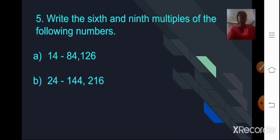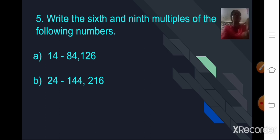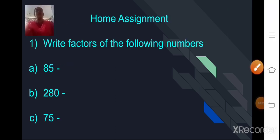The fifth question is: write the sixth and ninth multiples of the following numbers. For 14: the sixth multiple is 14×6=84, and the ninth multiple is 14×9=126. For 24: the sixth multiple is 24×6=144, and the ninth multiple is 24×9=216.